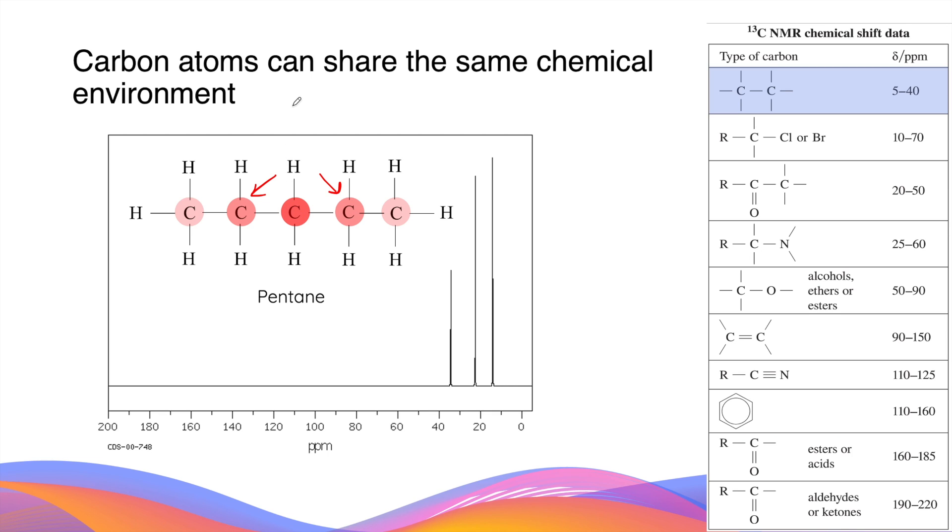This is best understood by drawing a line down the middle of the compound to visualize the symmetry that is present in the molecule of pentane. If you look at the connectivity and the relative position of the two carbon atoms that the arrows are pointing to, you will see that they are exactly identical, therefore they are in the same chemical environment.